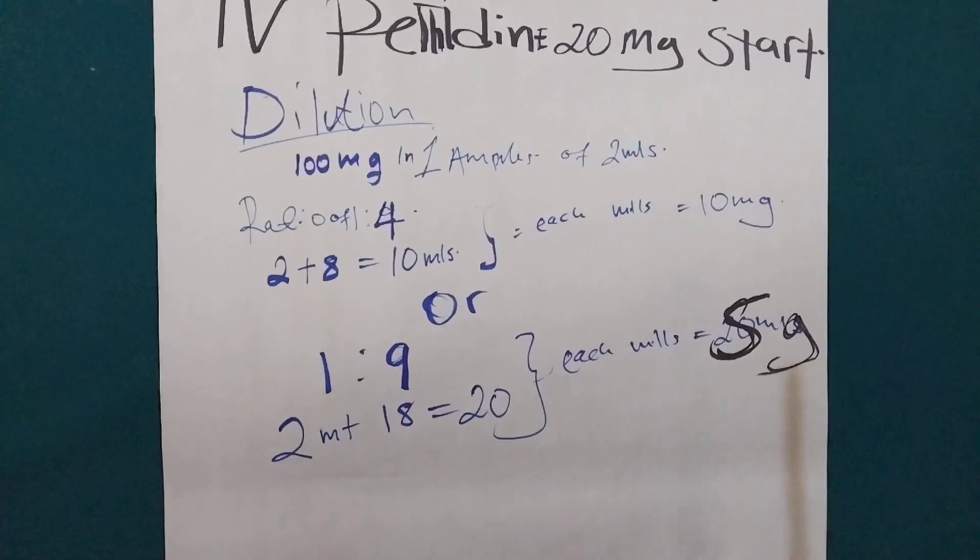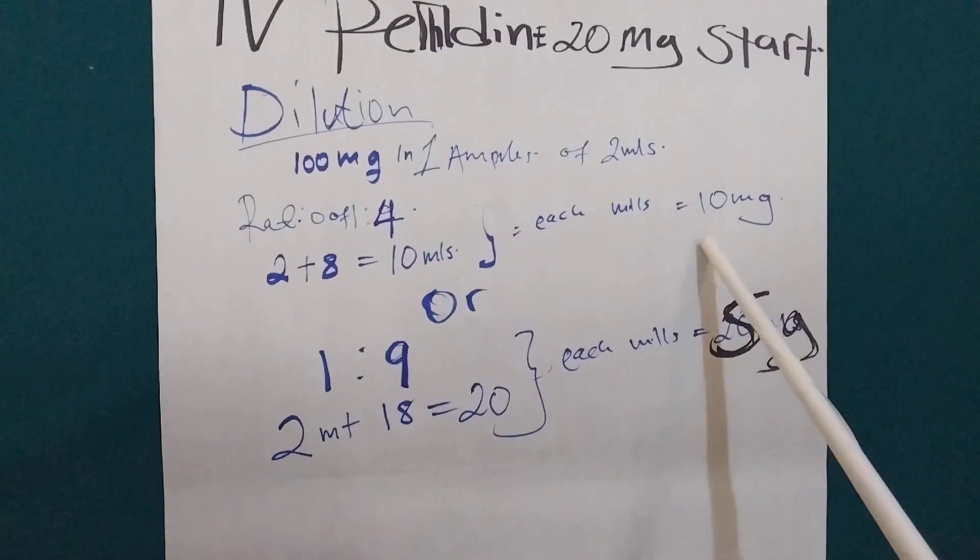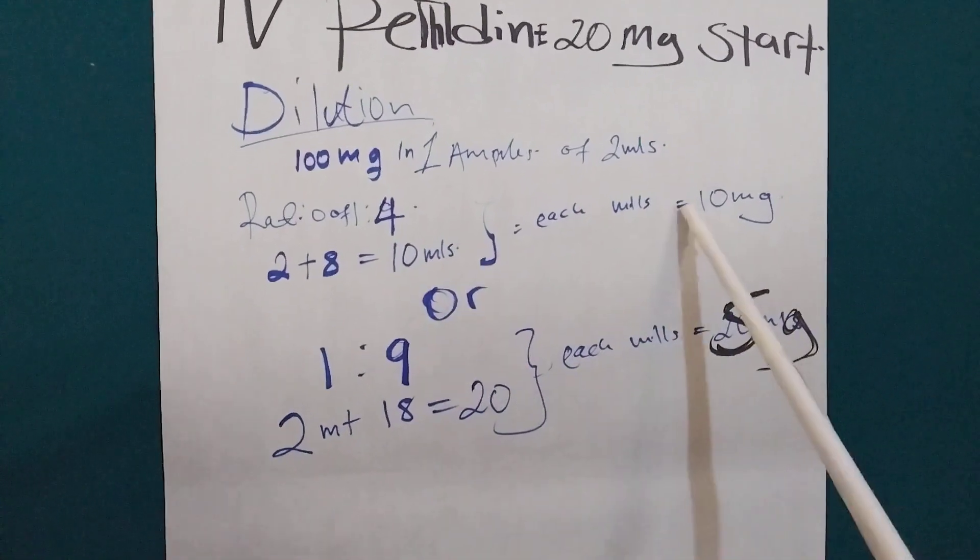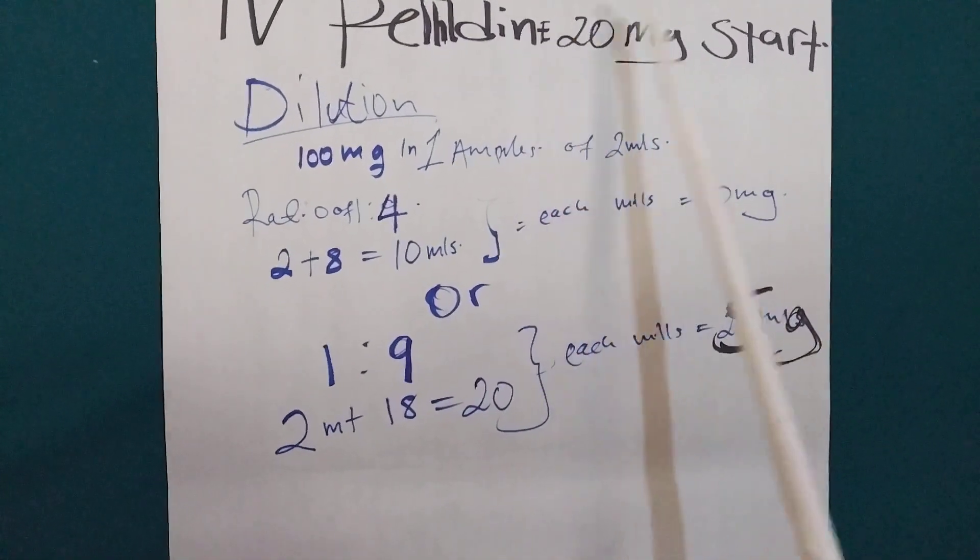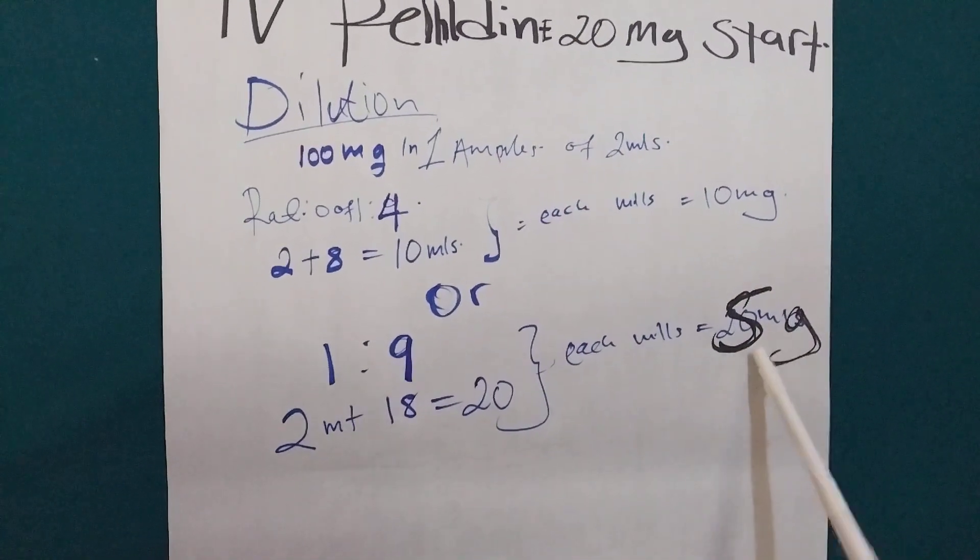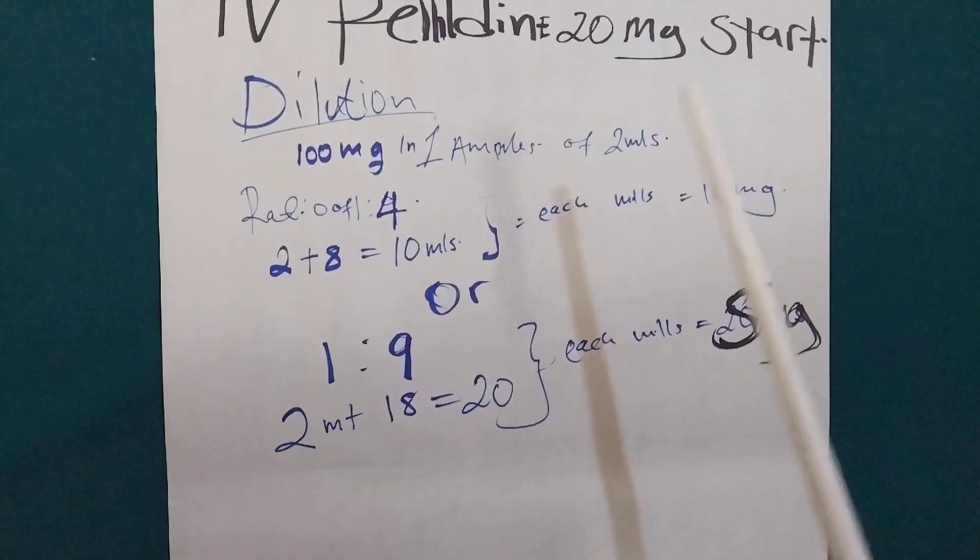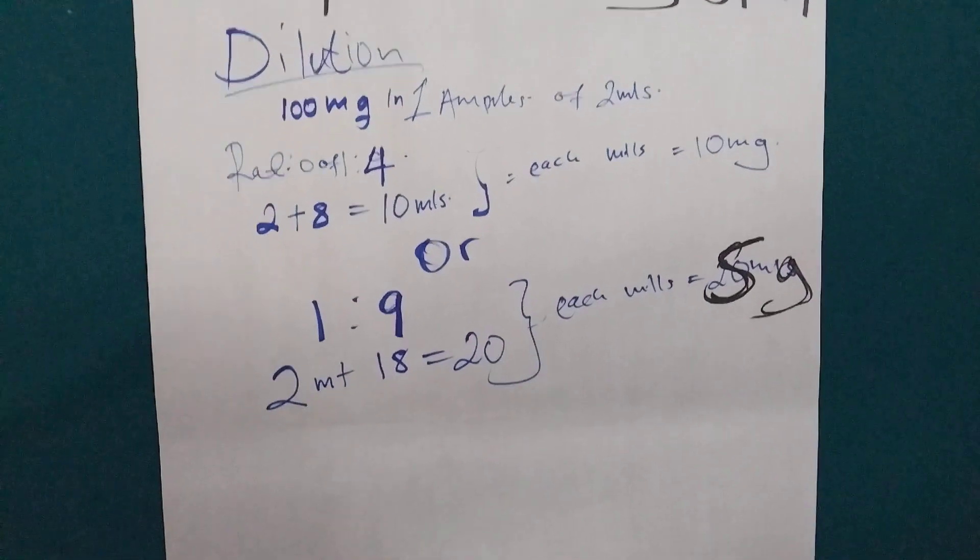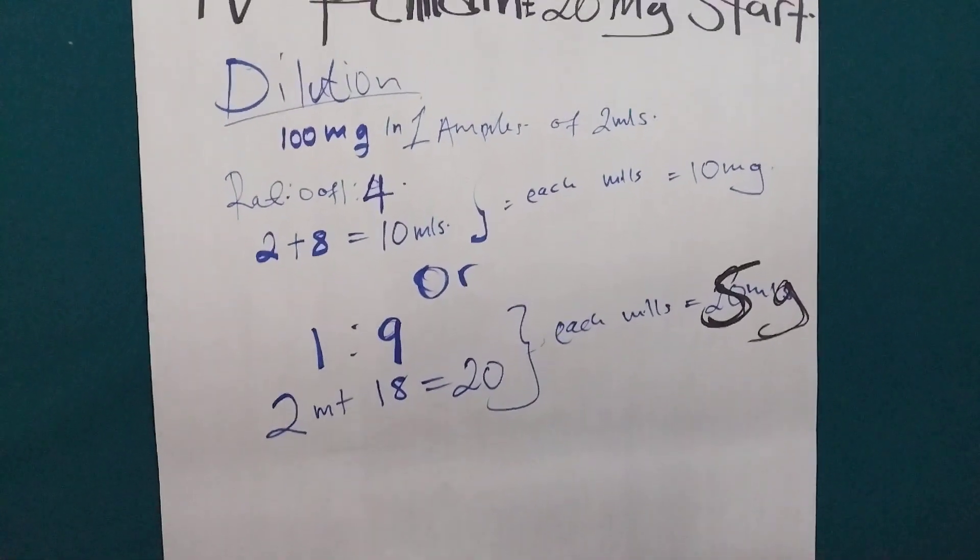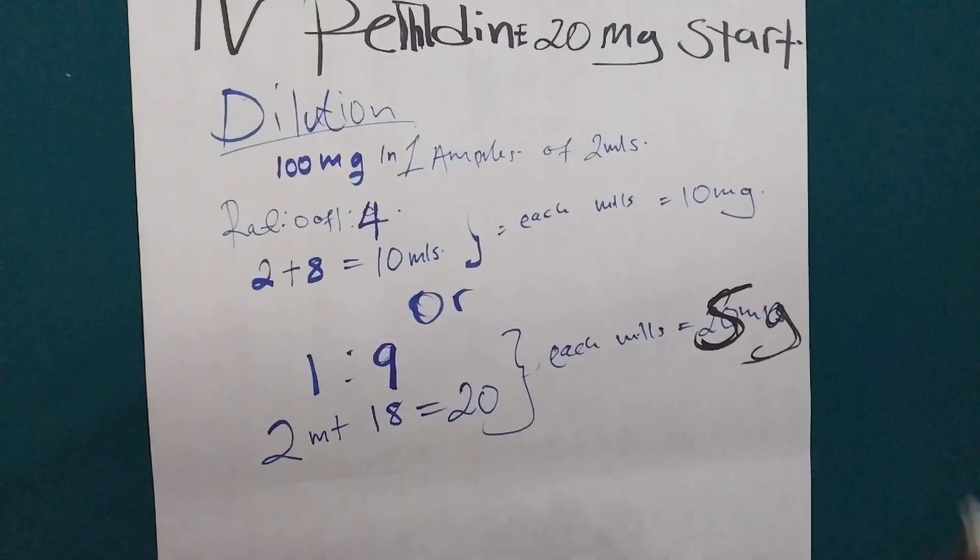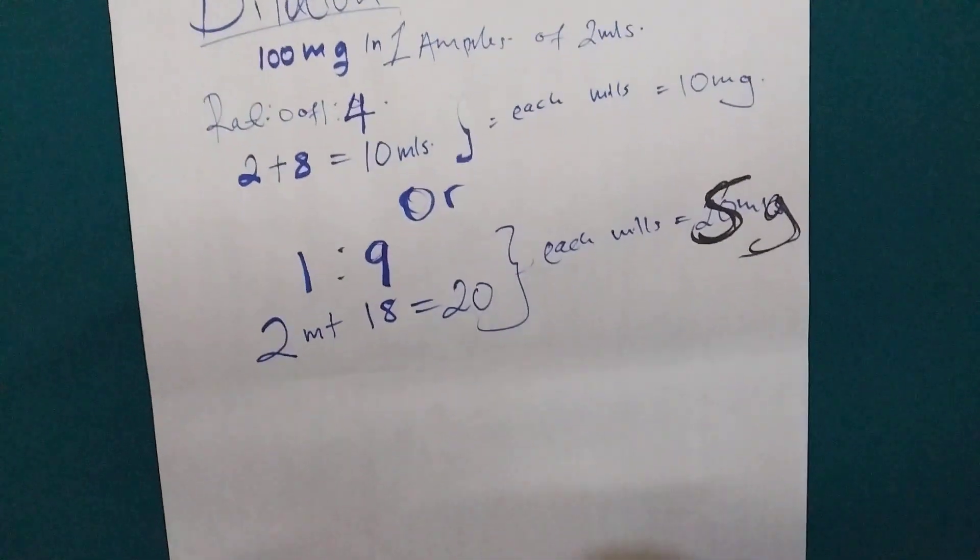So, for this case, we are going to aspirate 2 mL and give it to this baby. So, let me show you how we can calculate the mL we are going to give.